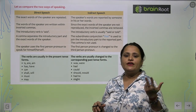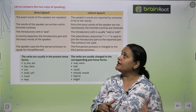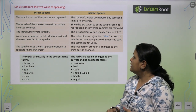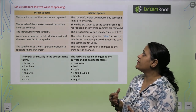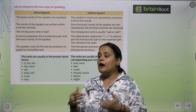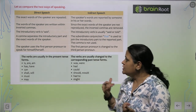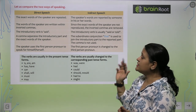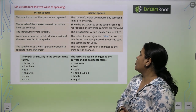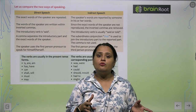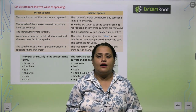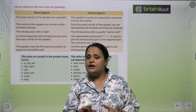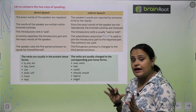Let us compare the two ways of speaking. What is the difference between direct and indirect speech? In direct speech, the exact words of the speaker are repeated, and the speaker's words are written with inverted commas. Since the exact words of the speaker are not reproduced in indirect speech, the inverted commas are removed. We don't say 'Rahul said that I want to buy a badminton racket' — we use the word 'he' instead.